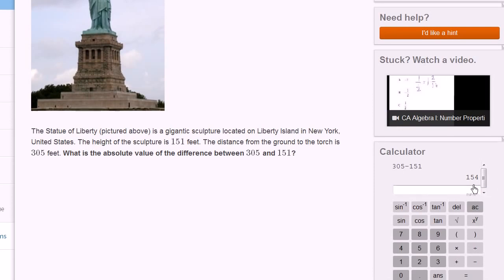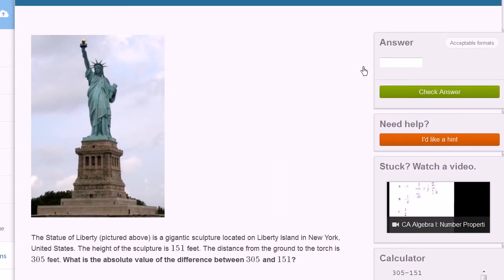And the absolute value of 154, the absolute value, there's a couple of ways you can think about it. You can literally just view it as how far is that number from 0? And 154, positive 154, is 154 away from 0. If this was negative 154, then that also would be 154 away from 0. The other way to think about it is whether it's positive or negative, the absolute value, you just take the positive version of it. So either way, we say 154.